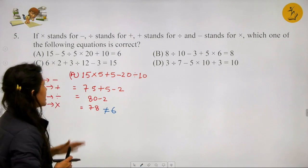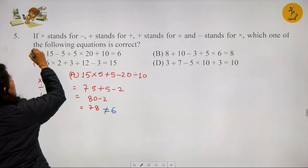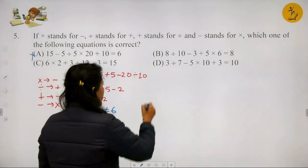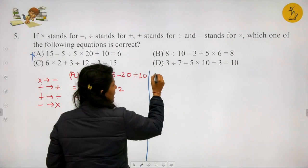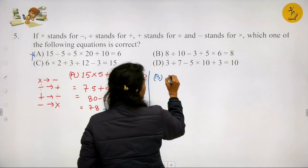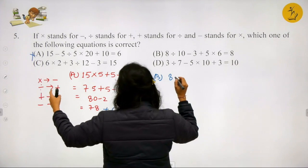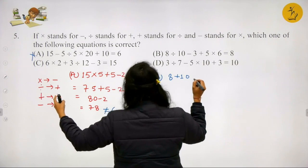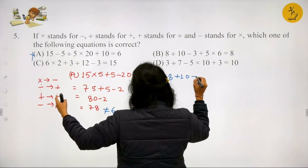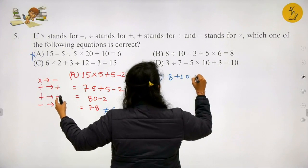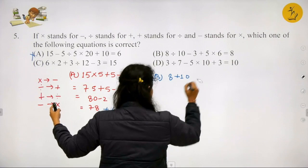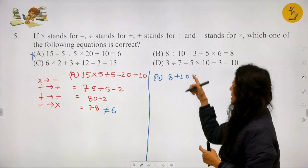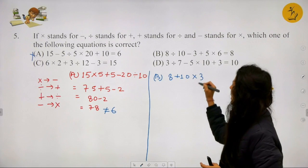Question 6: Given that greater-than sign denotes plus, less-than sign denotes minus, plus denotes divide, and multiply denotes greater-than. Checking Option A: 3 + 2 > 4 = 9 + 3 < 2 converts to 3 ÷ 2 + 4 = 9 ÷ 3 - 2, giving 1.5 + 4 = 3 - 2, i.e., 5.5 = 1, which is not true. Option B: 3 > 2 > 4 = 18 + 3 < 1 converts to 3 + 2 + 4 = 18 ÷ 3 - 1, giving 9 = 5, which is also not true.